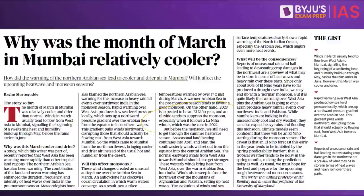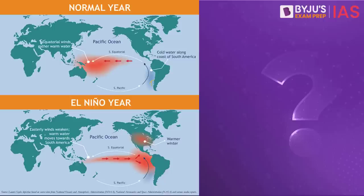Let us understand the concept of El Niño. Normally, there is a cold current along the Peru coast creating high pressure there, while on the eastern side of Australia and in the Indian Ocean there is low pressure due to warm temperatures. Wind moves from the high pressure region near Peru to the low pressure region near Australia, carrying moisture and causing rainfall in that area. This is the normal oceanic condition.